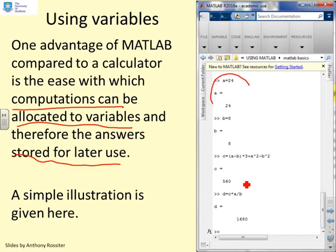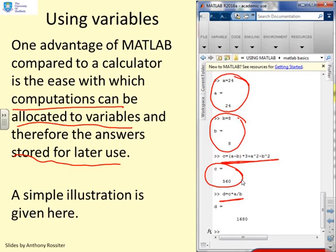I've put the value 24 into the variable A, the value 8 into the variable B. Now I've used the values of A and B in this computation. I've said that C is going to be A minus B cubed plus A squared minus B squared, and I've put the answer in C. Now I've used A, B and C to calculate D. So MATLAB is convenient because it allows you to put answers and computations into variable names.